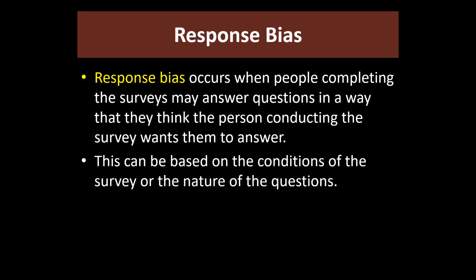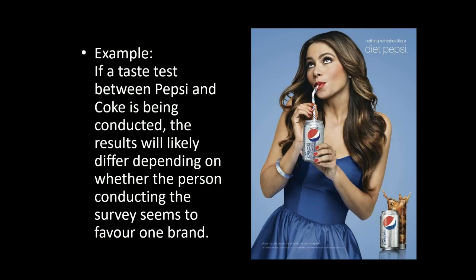Response bias is a more subtle type — it's harder to recognize, but something feels off. The idea is that the survey or setting leads you toward giving a specific answer. A classic example is Coke vs. Pepsi taste tests: Pepsi-sponsored ones always showed Pepsi was better, and Coke-sponsored ones always showed Coke was better. If you put up a giant Pepsi banner, offer Pepsi merchandise, and then ask people which they prefer, of course they're going to say Pepsi.